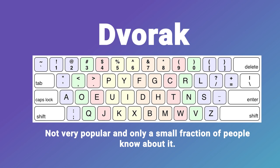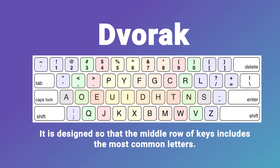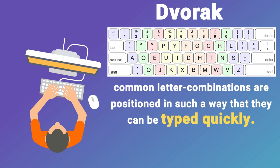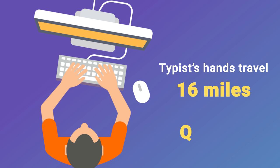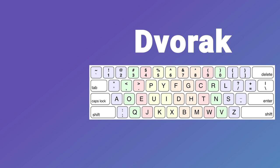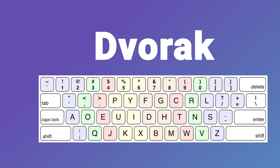The Dvorak keyboard is designed so that the middle row of keys includes the most common letters. In addition, common letter combinations are positioned in such a way that they can be typed quickly. It has been estimated that in an average 8-hour day, a typist's hands travel 16 miles on a QWERTY keyboard, but only one mile on a Dvorak keyboard. The Dvorak layout places all of the most commonly used letters in the home row, so your fingers don't have to move at all to hit these keys.